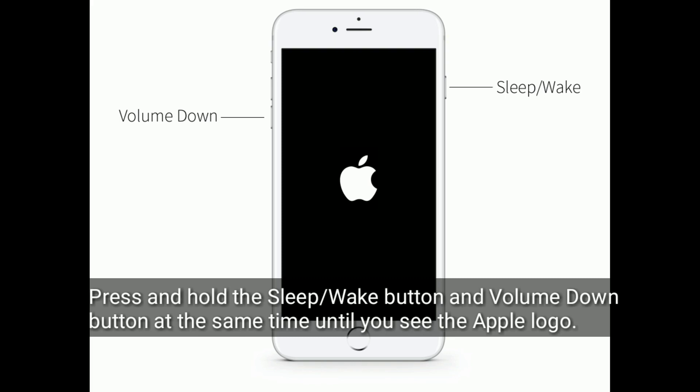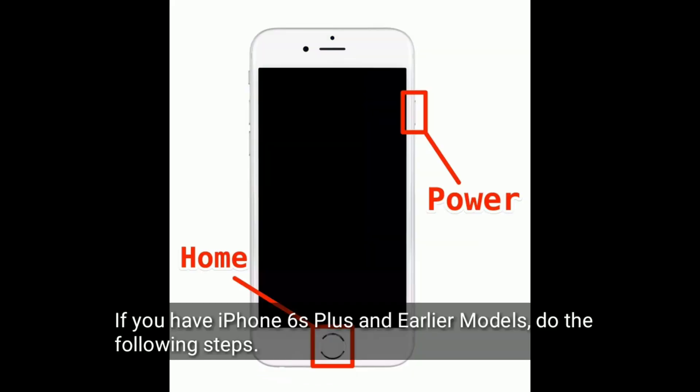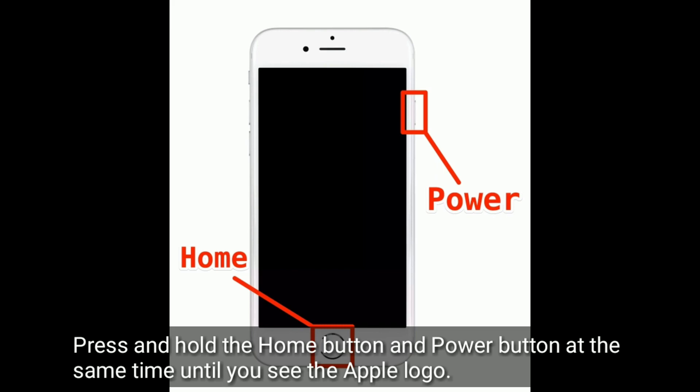Hold the sleep or wake button and volume down button at the same time until you see the Apple logo. If you have iPhone 6s Plus and earlier models, press and hold the Home button and power button at the same time until you see the Apple logo.